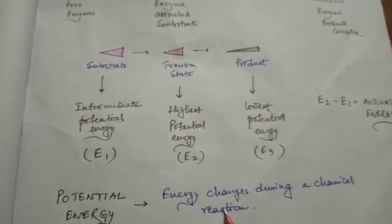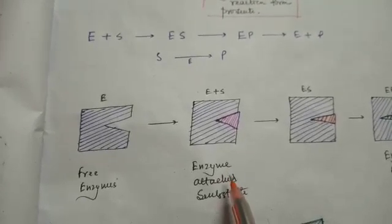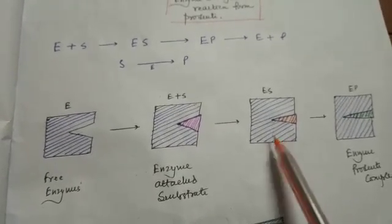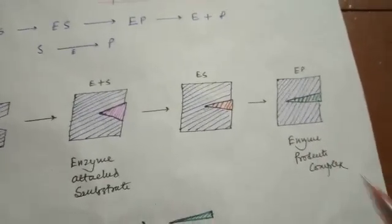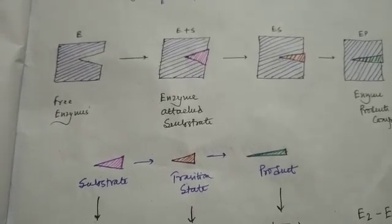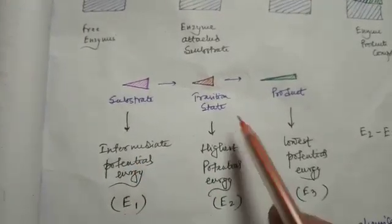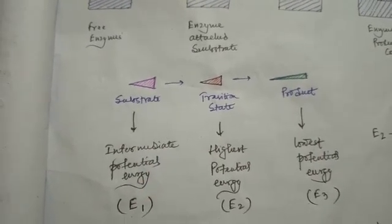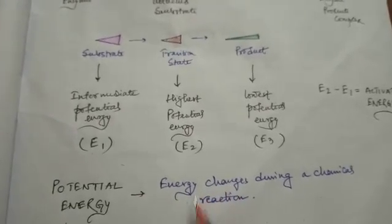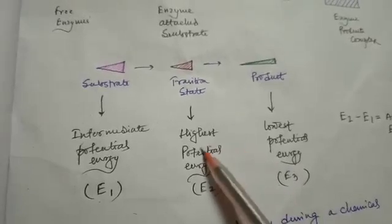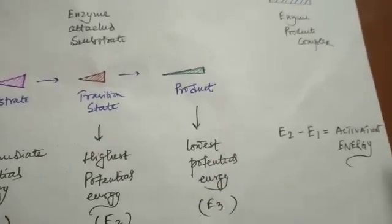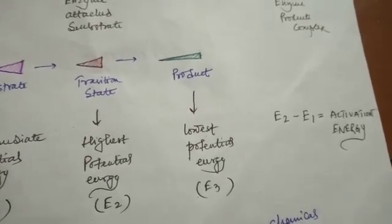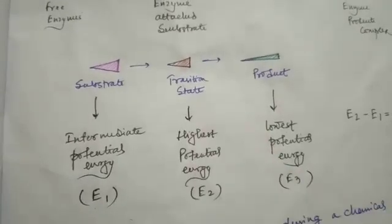That particular change in energy is known as the activation energy. Activation energy is the energy difference between the potential energy of the transition state and the intermediate state. Potential energy is nothing but the energy change during a chemical reaction. So activation energy is the energy difference between the transition state and the substrate — it is the energy a particular substrate must have to carry out a reaction. Thank you.